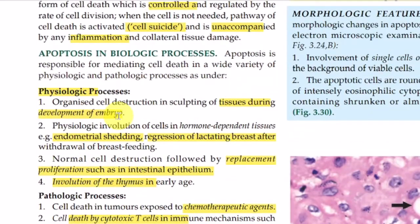In our body, apoptosis is basically two types: physiological apoptosis and pathological apoptosis. In physiological apoptosis, this process is required during the development of the embryo. For example, in the hands — the entire hand is developed as one unit, and when apoptosis occurs, the gaps between the fingers form. Similarly, tubes like the trachea and esophagus start as solid structures, but apoptosis occurs in the central part and they become tube-like structures.